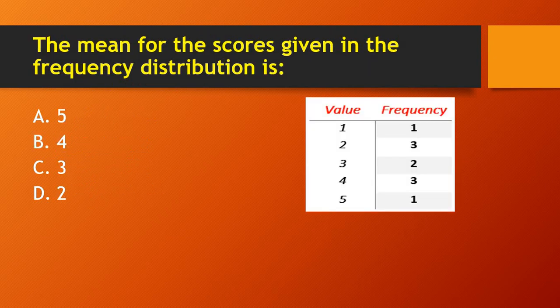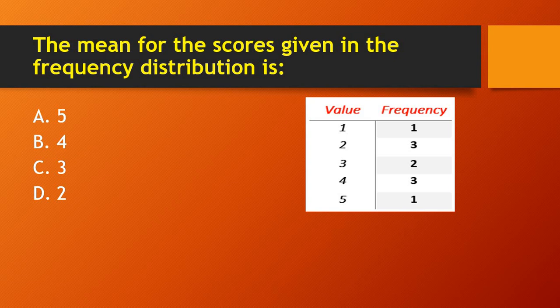Next question: find the mean for the scores given in the frequency distribution. You can see a table with values from one to five in the first column and frequencies in the second column. To calculate the mean, multiply each value by its frequency: 1×1=1, 2×3=6, 3×2=6, 4×3=12, 5×1=5. Adding these: 1+6+6+12+5=30.